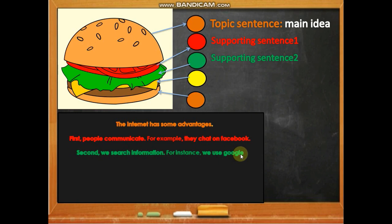Yellow — which is the cheese — is supporting sentence three in the paragraph: 'Finally, children have fun. As an example, they play video games.'